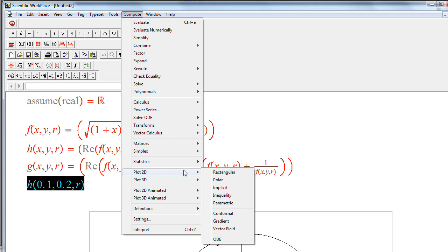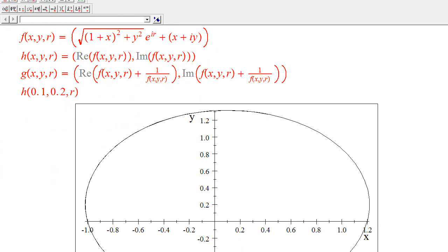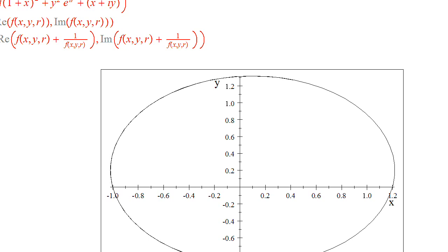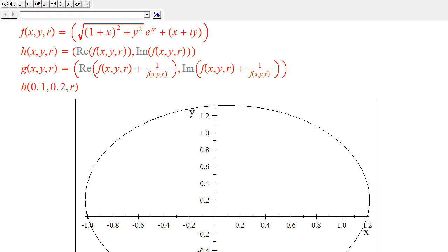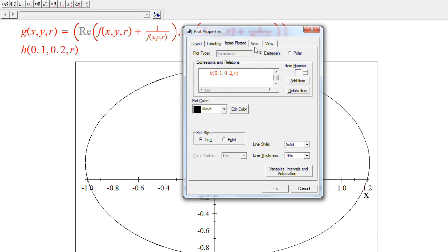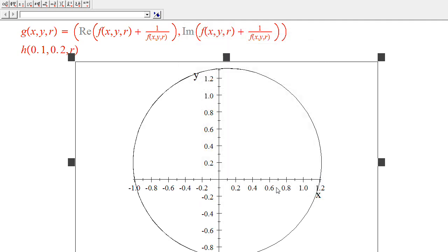So what I'm doing next is to click on Compute, Plot 2D, and I'm using Parametric. And this looks like an ellipse. Let me show you, but it is not an ellipse. So I'm just telling Scientific Workplace that it should use equal scaling along each axis, like this. This looks better.